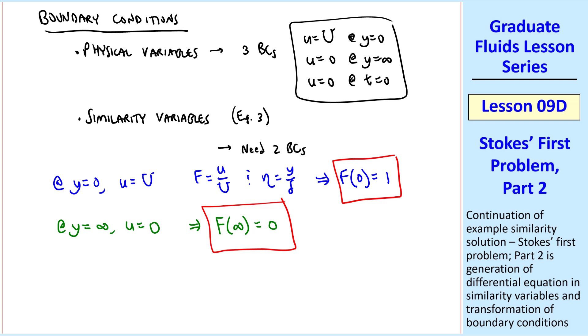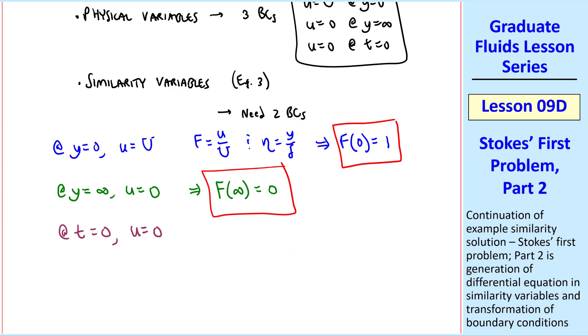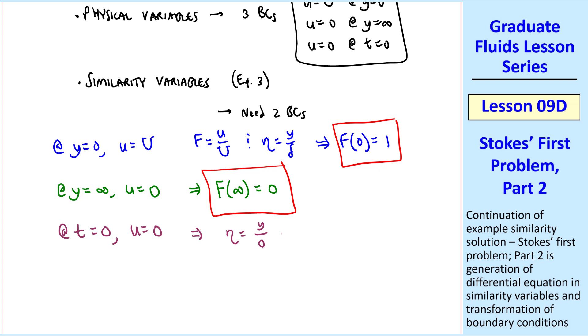But what about this third boundary condition? At t = 0, u is 0, and eta is y/0, which goes to infinity, since we can analyze eta at any y. And when u is 0, F is 0, thus F(∞) = 0.